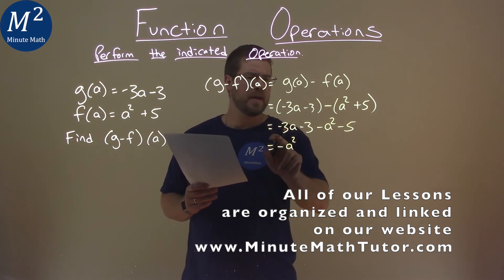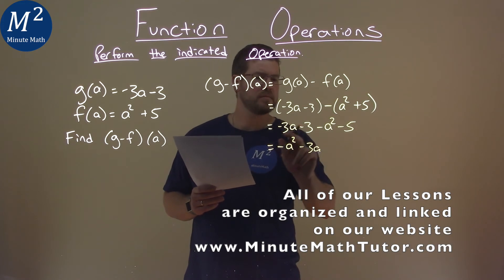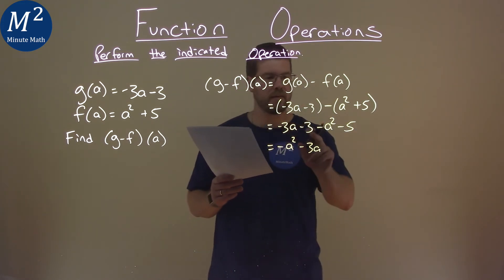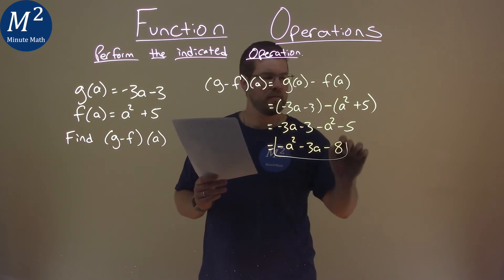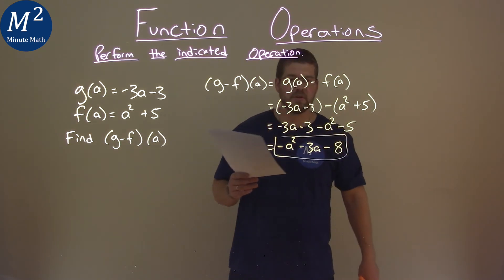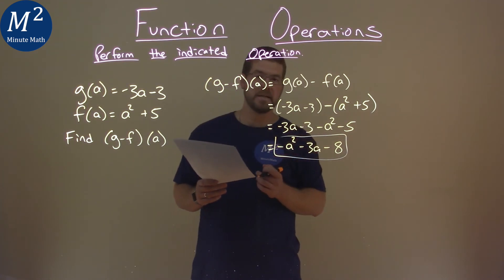Then, negative 3a comes down. There's nothing else with an a. And now, we just have our numbers. Negative 3 minus 5 is negative 8. And so, our final answer here is just negative a squared minus 3a minus 8.